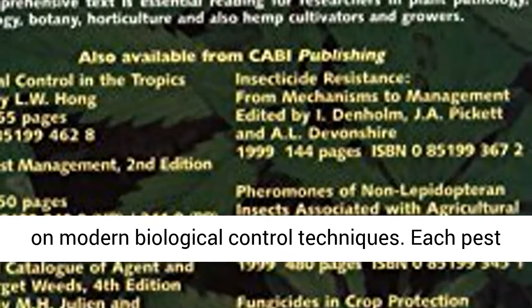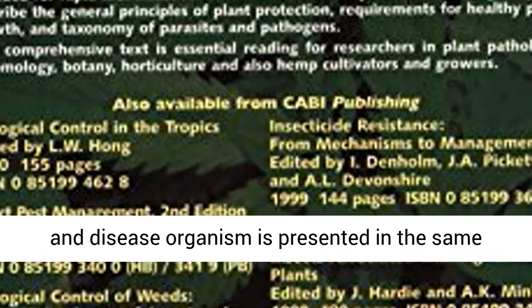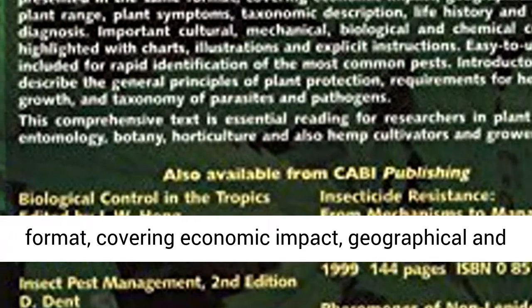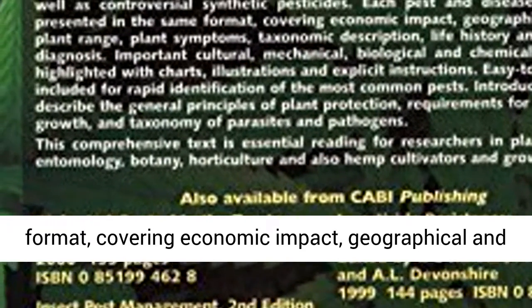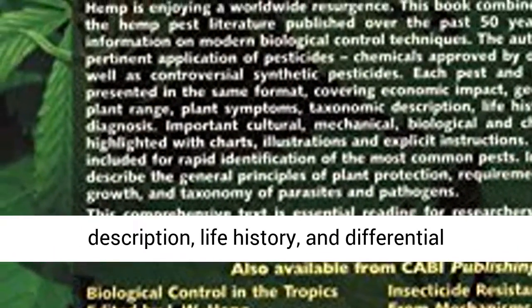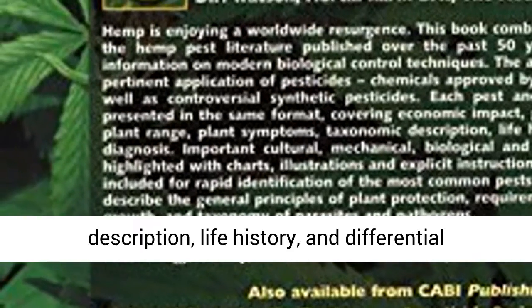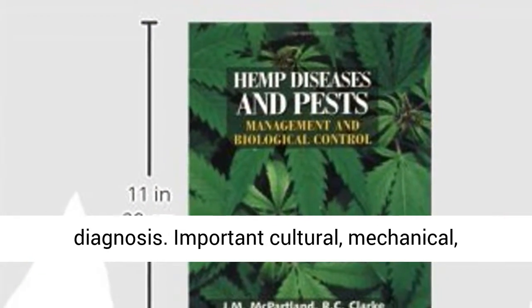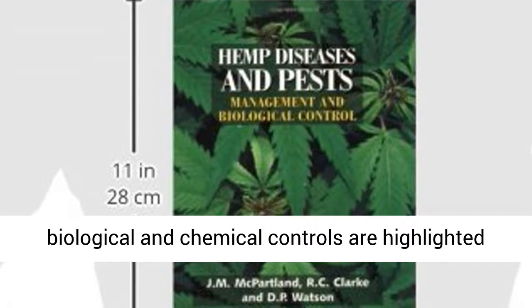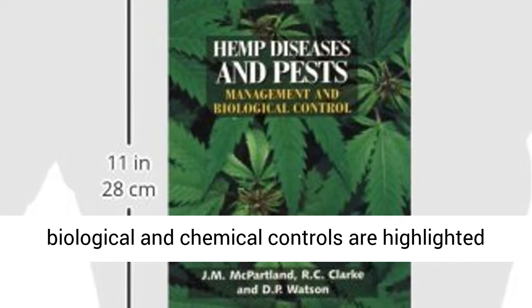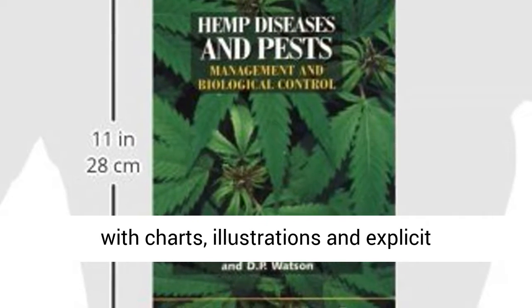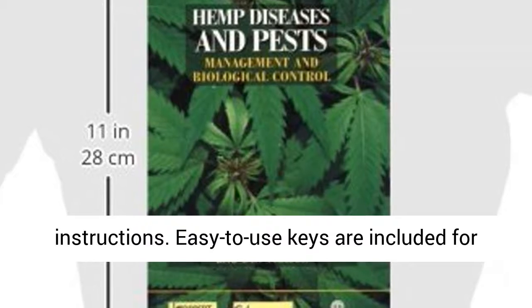Each pest and disease organism is presented in the same format, covering economic impact, geographical and host plant range, plant symptoms, taxonomic description, life history and differential diagnosis. Important cultural, mechanical, biological and chemical controls are highlighted with charts and illustrations with explicit instructions.